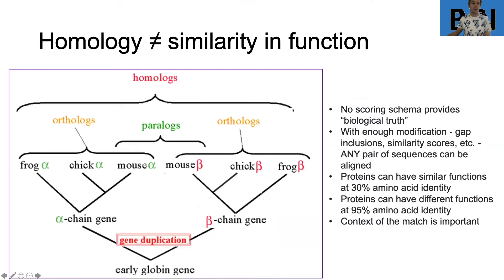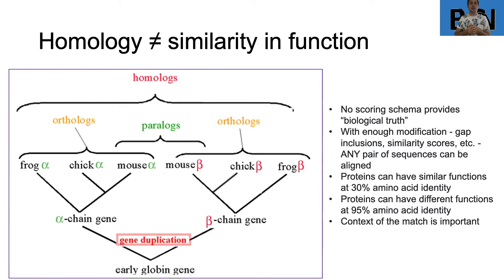The first thing we need to cover is that homology does not equal similarity in function, and there's a biological reason for this. In this classic example of gene duplication events, we have a pre-ancestral globin gene — the precursor to modern-day hemoglobin present in metazoans. At some point in history there's a gene duplication event and you end up generating proteins called the alpha chain and the beta chain, each with their own functionality.